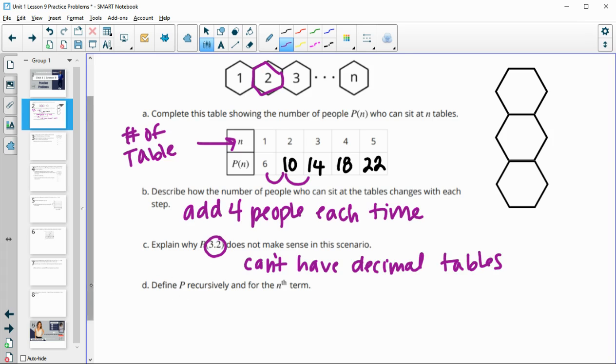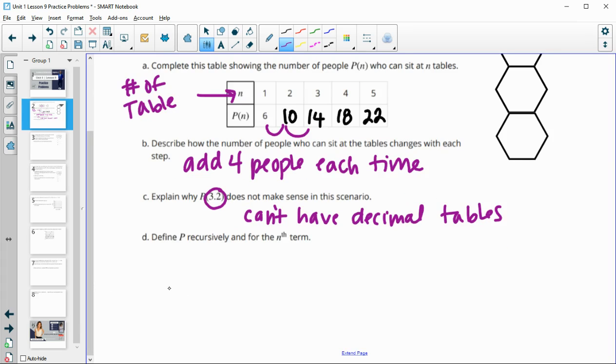And then define P recursively for the nth term. So we're going to define our first term, which was six people. So with one table, six people can sit. So for n number of tables, how many people can sit? We're going to take the previous number of people, so the previous term, plus four spots. And this is going to be for n is greater than or equal to two.